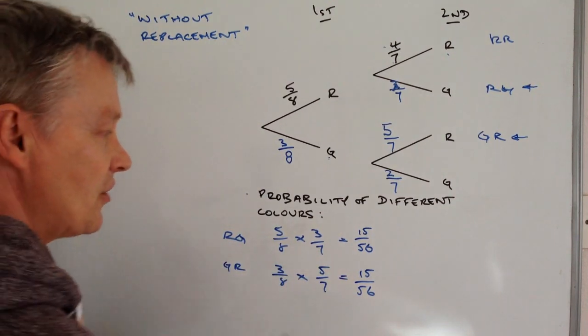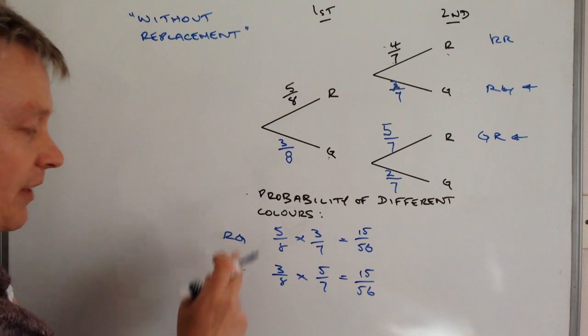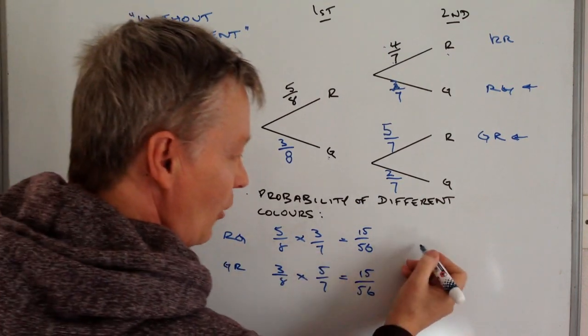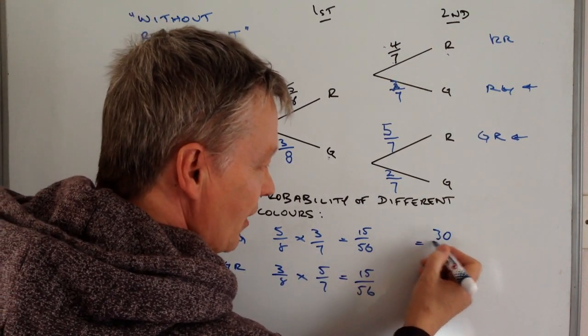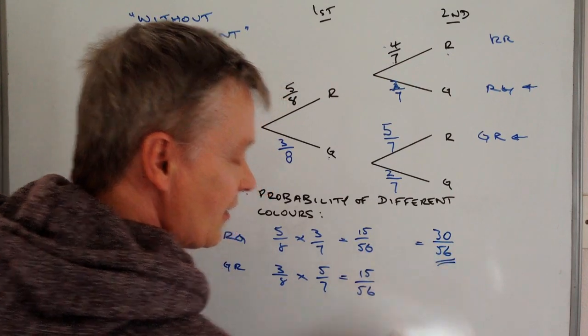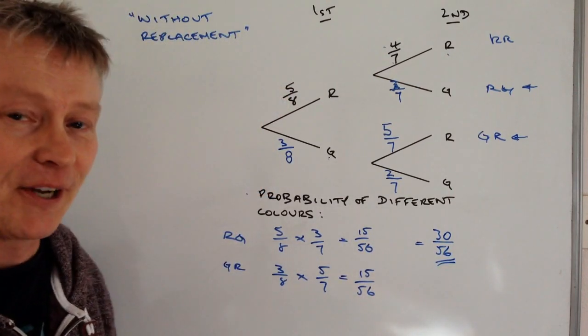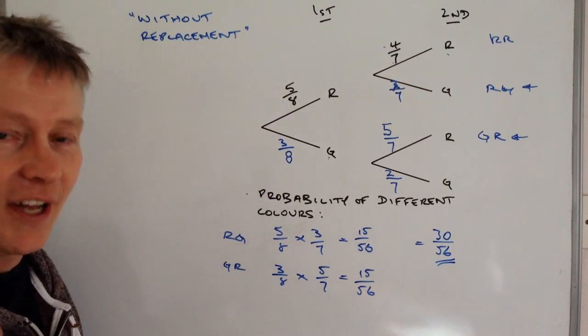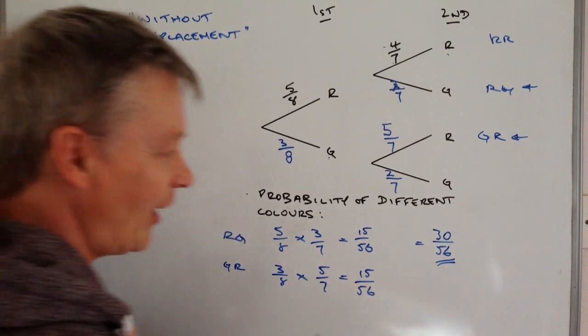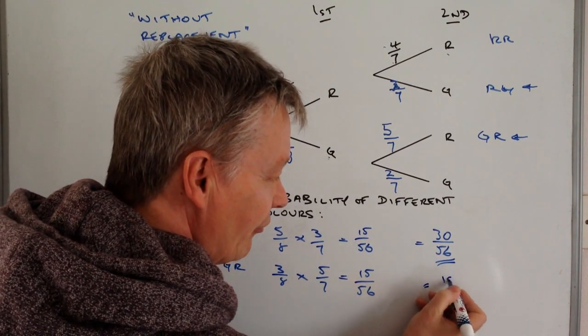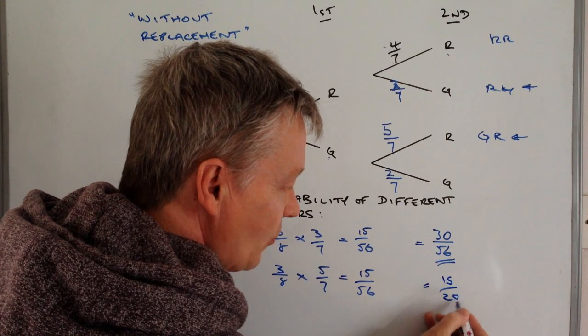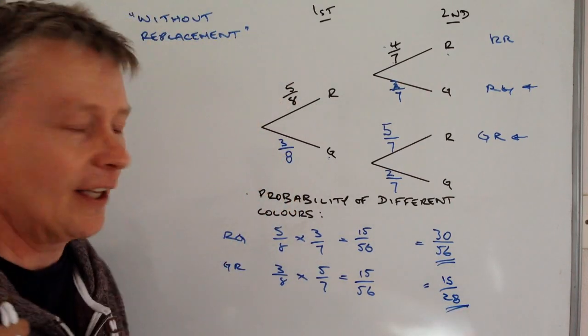So the probability of either red green or green red total is going to be 30 out of 56 and if we're going to be very smart about it we can actually reduce that as you should do normally with fractions and that's going to be 15 out of 28, and that's my final answer.